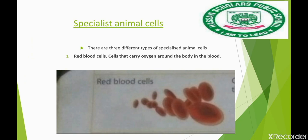Red blood cells carry out a specialist function: they provide oxygen to all the different parts of the body. Here is the diagram of red blood cells, which shows the different red blood cells. The second specialist animal cells are the nerve cells.